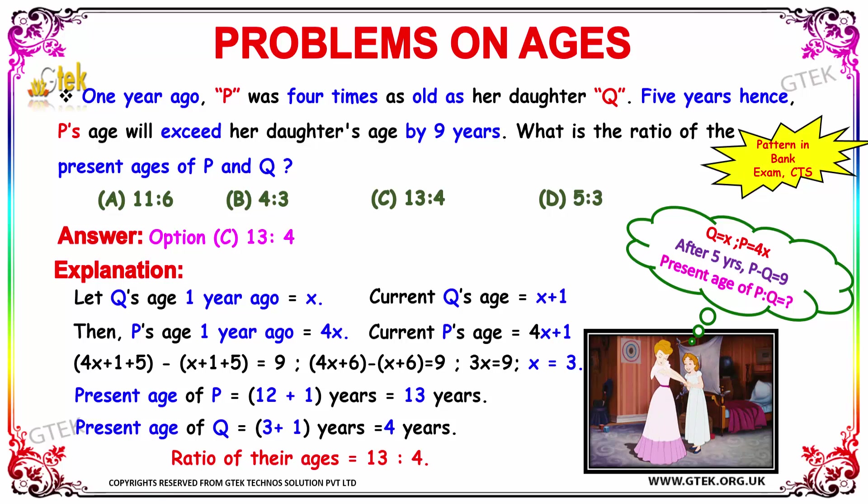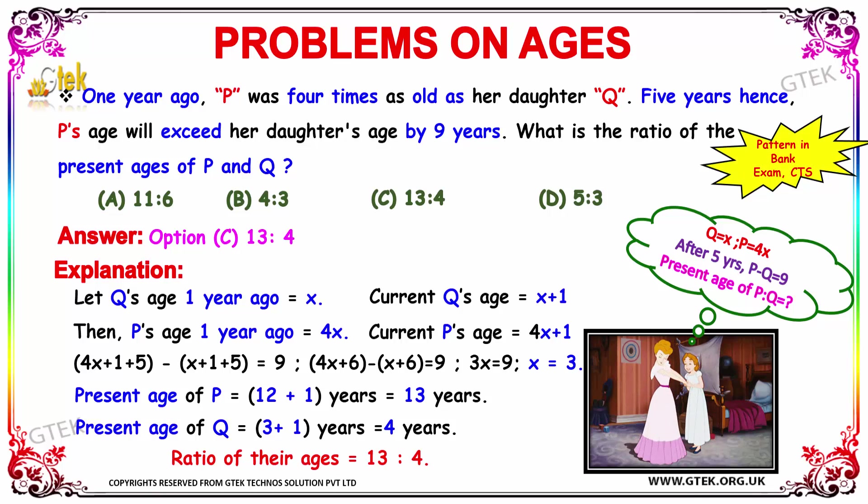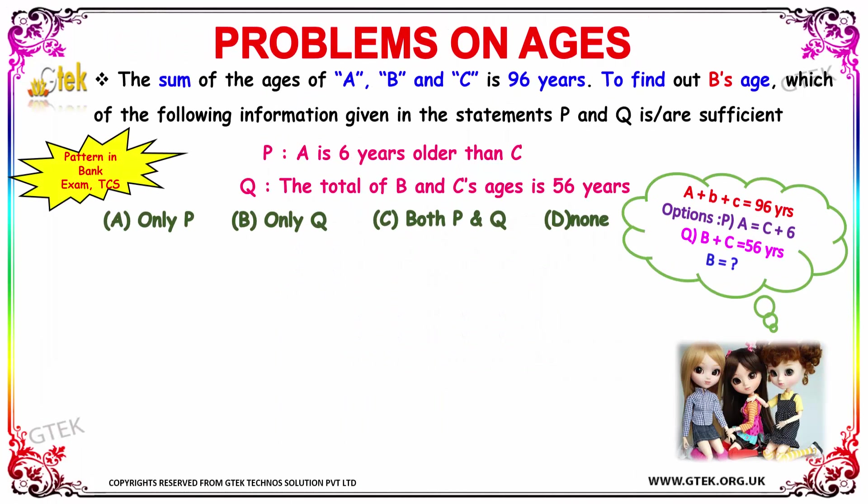These patterns of questions appear in bank and CTS exams. Let us move on to our next interesting question. It is given that the sum of the ages of A, B and C is equal to 96 years. We have to find out B's age with the following information.